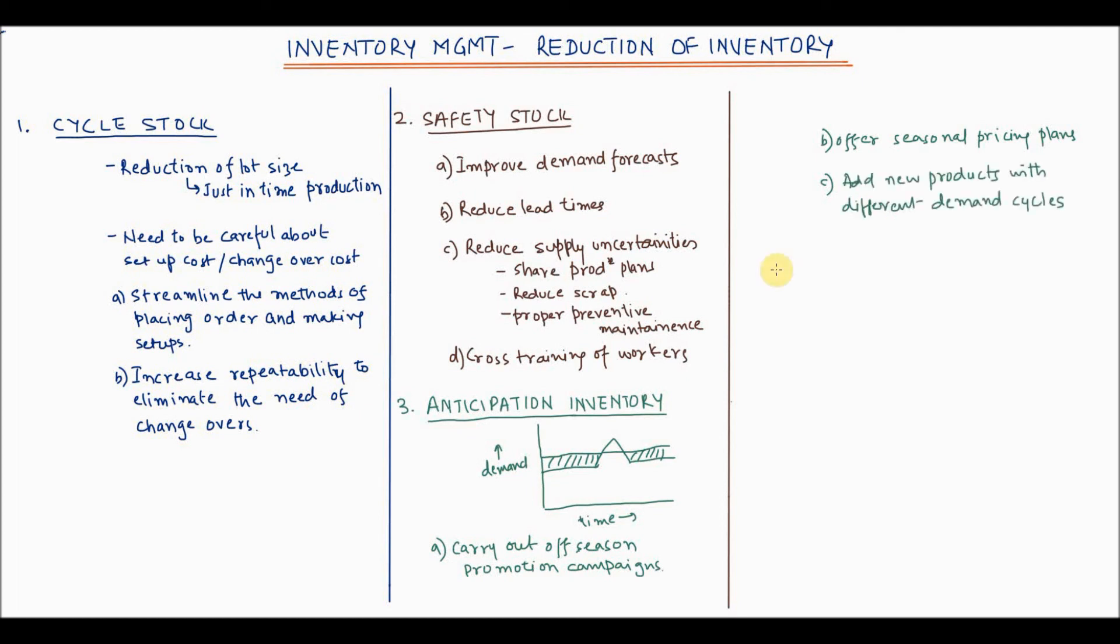Now let's look at the fourth type of inventory, which is pipeline inventory. Pipeline inventory is the inventory moving from one point to another in the material flow. As this is a function of the transportation time, following levers should be used.